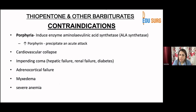It is contraindicated in any patient with a known or familial history of porphyria, as it induces aminolevulinic acid synthetase and increased porphyrin can precipitate an acute intermittent porphyria. It is also contraindicated in patients with hemodynamic instability, impending coma, adrenocortical failure, myxedema, and severe anemia.